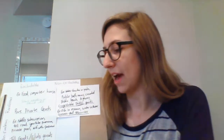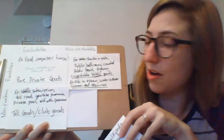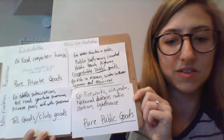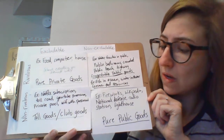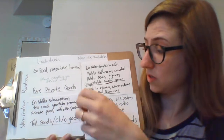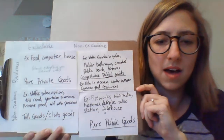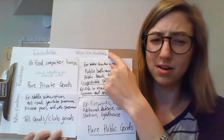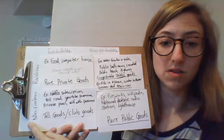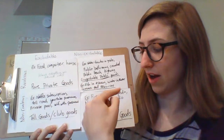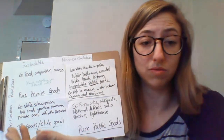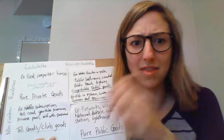The last category is our non-rivalrous, non-excludable goods — our pure public goods — which represent a market failure. Pure public goods are goods where people can use them without paying and one person's use doesn't affect another's. This is important because it's difficult to get people to pay for them. But once provided, we'd love for people to use them since they're non-rivalrous — a firework show, Wikipedia, national defense — we want people to make use of those things.